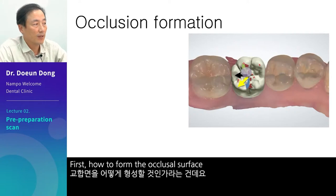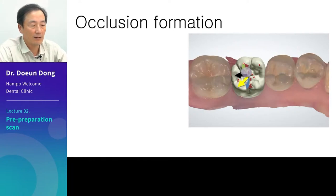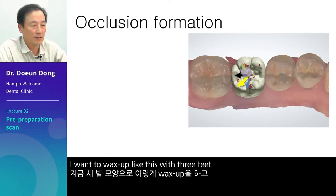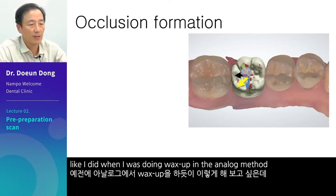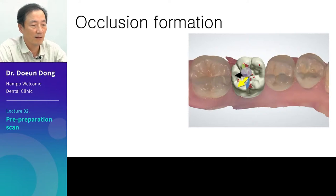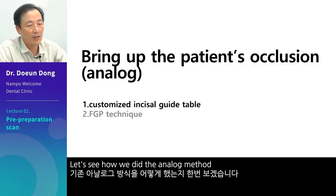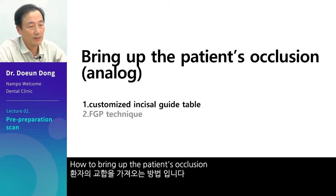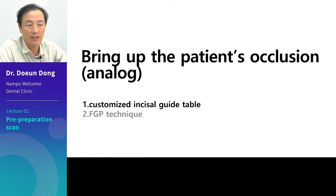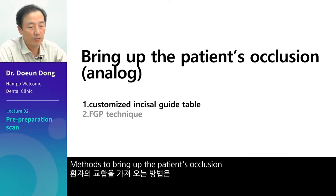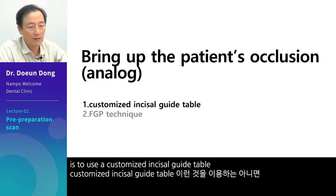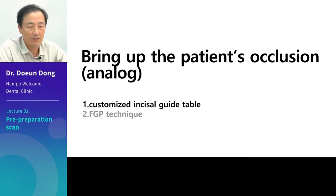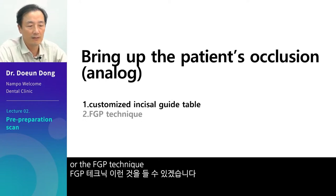First, how to form the occlusal surface. I want to wax up like this with three feet, like I did in the analog method. Let's see how we did the analog method — how to bring up the patient's occlusion. Methods to bring up the patient's occlusion include using a customized incisal guide table or the FGP technique.